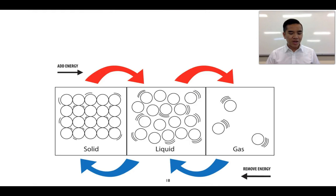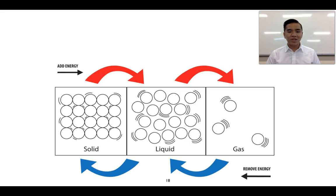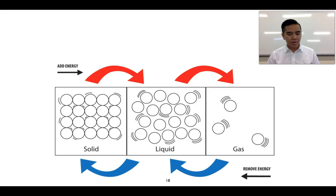We've got an example of a substance that can exist in three different states, and we can use water as an example. Water exists as a solid, which we call ice; as a liquid, which we just call liquid water; and as a gas, which we call vapour or steam. We actually have to put in energy in order to take particles of water as a solid and convert it into a liquid.